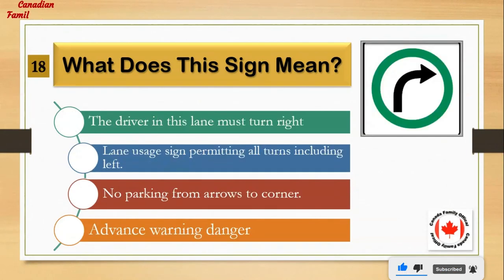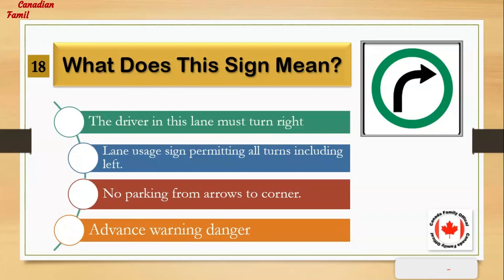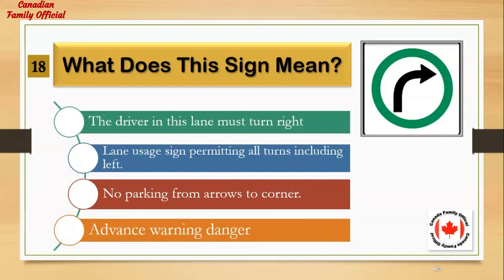What does this sign mean? Number 1: the driver in this lane must turn right. Number 2: lane usage sign permitting all turns including left. Number 3: no parking from arrows to corner. Number 4: advance warning danger. And the answer is: the driver in this lane must turn right.